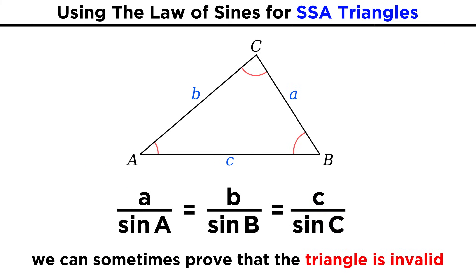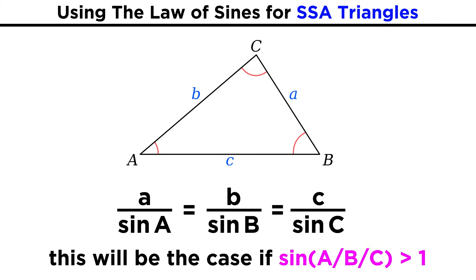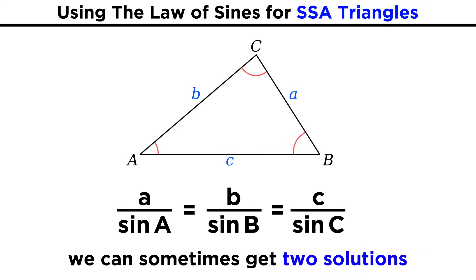The interesting thing about this case is that sometimes, given two sides and an angle, the law of sines will prove that the third side can't possibly connect the other two and the triangle can't exist. This would occur if we solve for the sine of another angle and this value exceeds one, which is impossible for the sine function. It is also possible that SSA triangles result in two solutions if we get a value for sine that could correspond to two different angles.